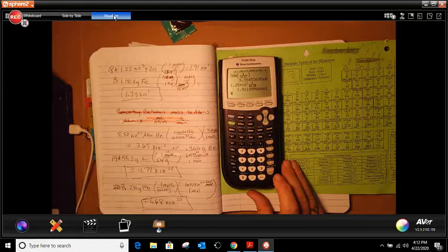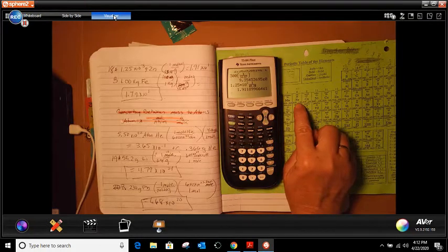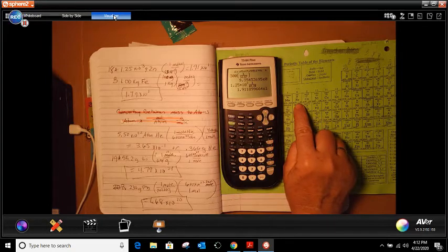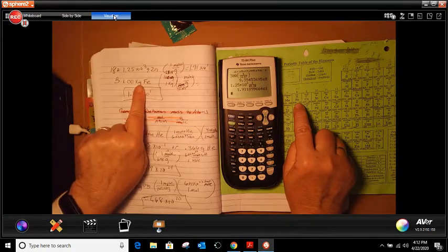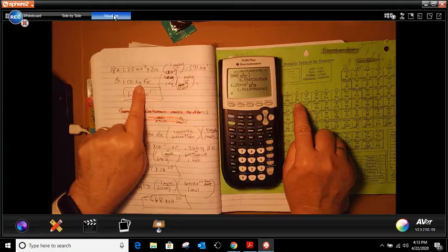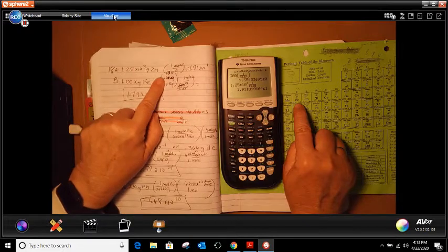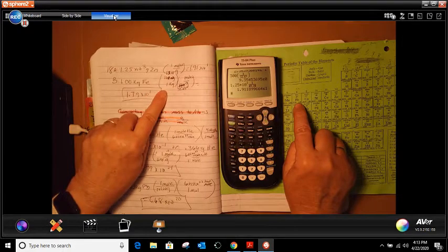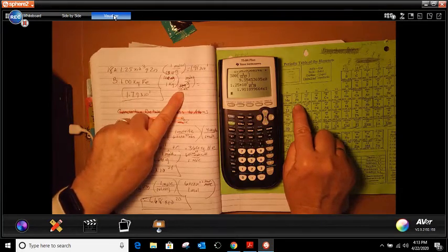And then the next one is FE. FE is right here, right beside it. And it says that it is 55.85 grams. Do you see it? But here's the issue. This is kilograms first. So we're going to have to convert it to grams first. So what I did is I put 1 kilogram, 1,000 grams is in 1 kilogram, and then I'm going to do 1 mole, and then my 55.85.